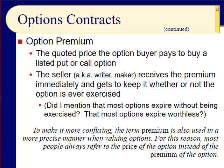Slide 22: the premium. That's the real name for the price of the option — they don't want you to confuse it with the strike price, though everybody just says 'price.' The premium is the quoted price the buyer of the option pays to buy the call or put. The seller, writer, or maker receives the premium immediately and gets to keep it whether or not the option is ever exercised. Most options expire without being exercised. The term 'premium' is also used more precisely when valuing options, which is why most people refer to the 'price' of the option instead.